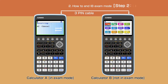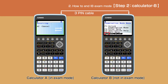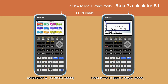Now, on the other calculator that is not in exam mode, choose F3 to open the exam mode menu. Press F1 to unlock the examination mode. Press F1 to continue unlocking the other calculator. Press exit to finish the process.